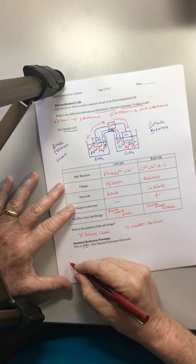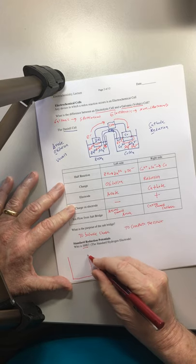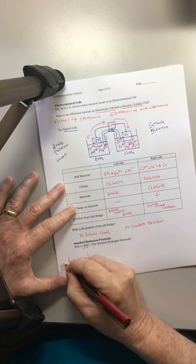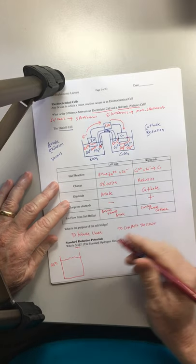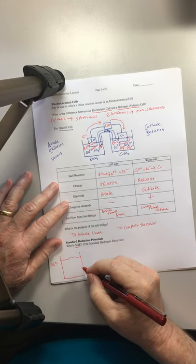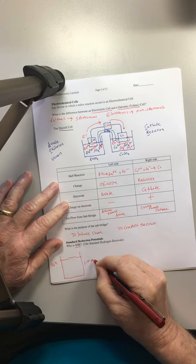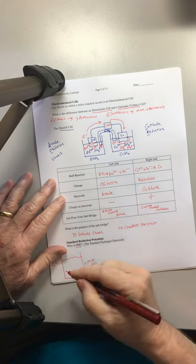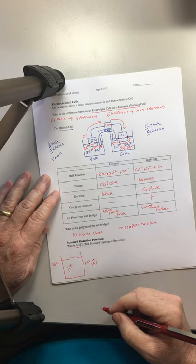So what does this look like? We're going to have a beaker. And it's very important that it be at 25 degrees Celsius, because these are standards, of course. And in it, we're going to have 1.00 molar HCl. 1.00 molar again, because these are standards. So we're going to have one molar H+ floating around down in here.